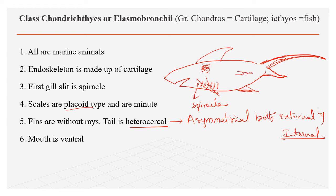The vertebral column is extended into one of the branches of the caudal fin. Because of this the caudal fin does not give two equal parts when divided, making it heterocercal — asymmetrical both externally and internally.